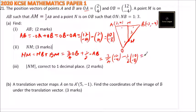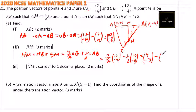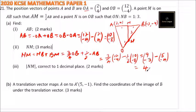Multiplying three-quarters by (12, -4) gives (9, -3). Then one-half of (10, -8) gives (5, -4). So NM equals (9 minus 5, -3 minus (-4)), which is (4, 1). So that is vector NM equals (4, 1).